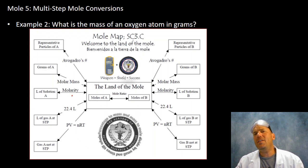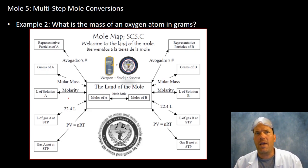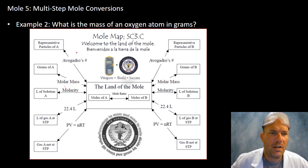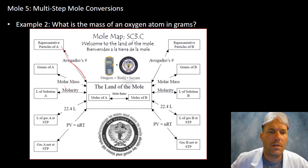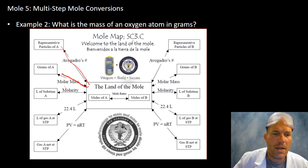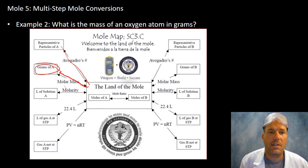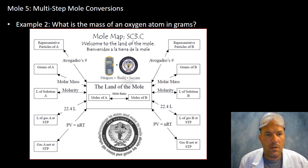Now we're asked: what is the mass of one oxygen atom in grams? We're going to have to go through the land of the mole, using Avogadro's number and then molar mass to find the grams — that's what this example is asking.